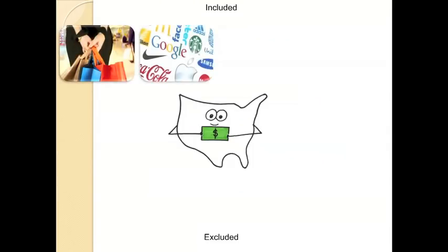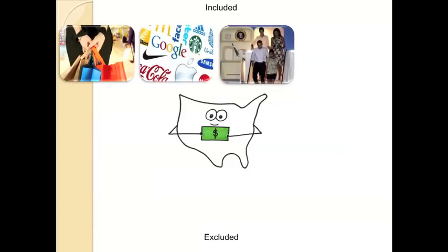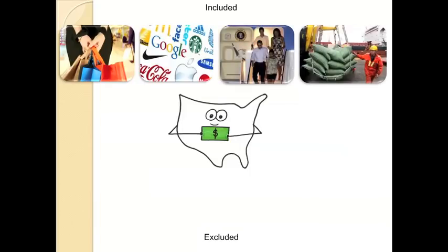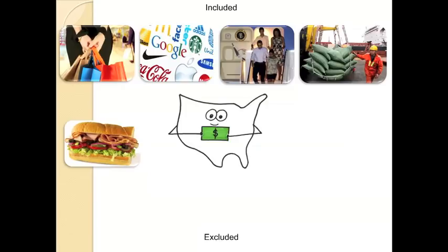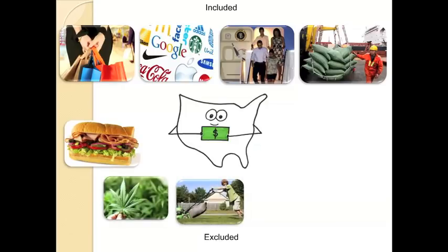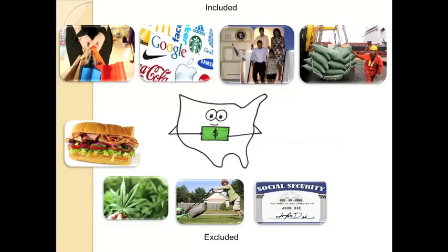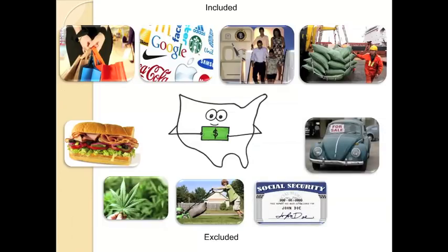To sum it up, what is included in GDP? Consumer spending, business spending, government spending, foreign spending. What is excluded? Intermediate products, black market products, doing your own lawn or off-the-market transactions, cash transfers, and second-hand sales. We'll talk more about this in class. You can go ahead and proceed to your video quiz on GDP.